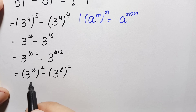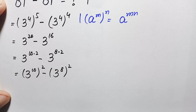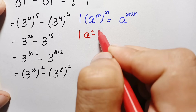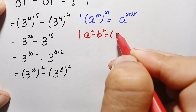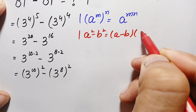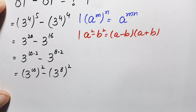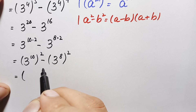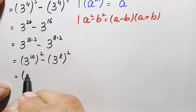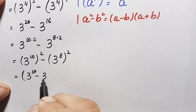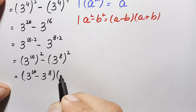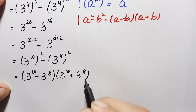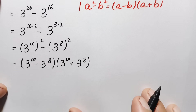There is a square over both terms, so this is the algebraic identity a squared minus b squared. We will use the identity: a squared minus b squared equals (a minus b)(a plus b). Here, a is 3 to the power 10 and b is 3 to the power 8. So this becomes (3 to the power 10 minus 3 to the power 8) times (3 to the power 10 plus 3 to the power 8).